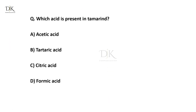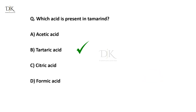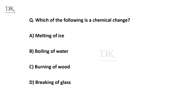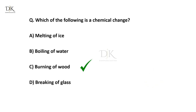Which acid is present in tamarind? The right answer is tartaric acid. Which of the following is a chemical change? The right answer is burning of wood.